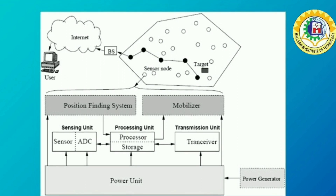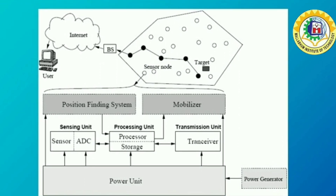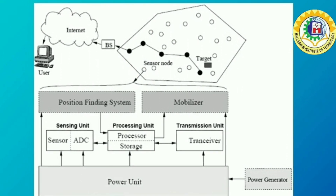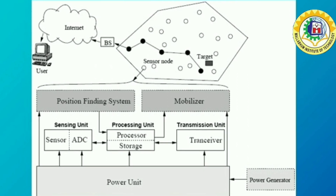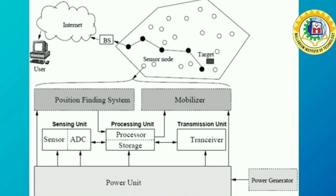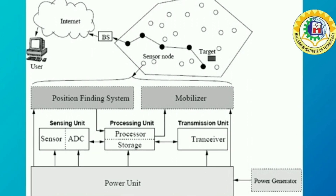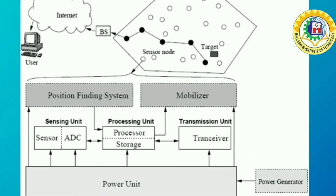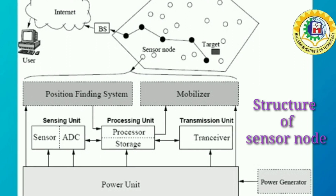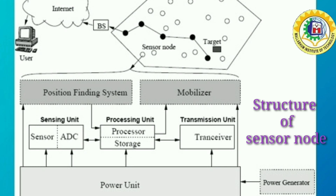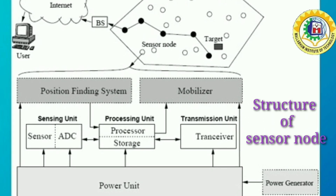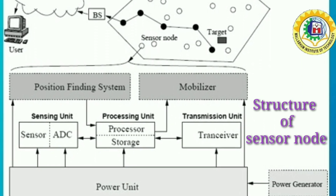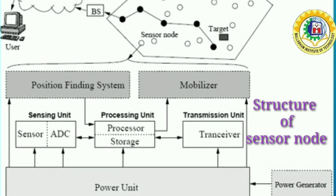Sensing units are usually composed of two sub-units: sensors and analog to digital converter. The analog signal produced by the sensors is converted to a digital signal by the ADC and then fed into the processing unit. The processing unit is generally associated with a small storage unit and manages the procedures that make sensor nodes collaborate with other nodes to carry out the assigned sensing task. A transceiver unit connects the node to the network. One of the most important components of a sensor node is the power unit, which can be a solar cell.